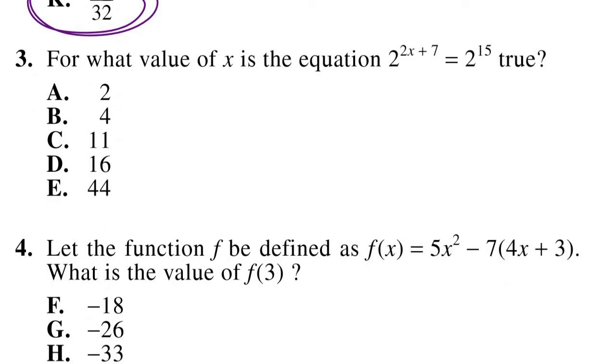Number 3. For what value of x is the equation 2^(2x+7) = 2^15 true? Now we can remember our rule that we just cancel out the bases if they're the same. So if we have the same base, we can just cross them out and set the equation equal to each other.